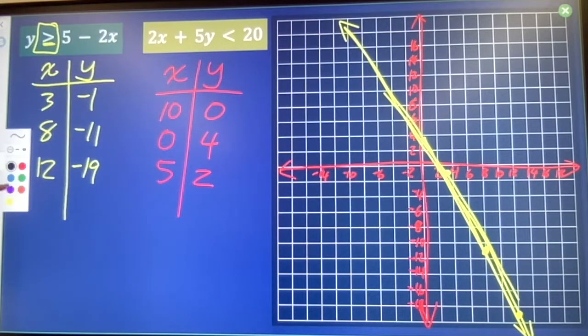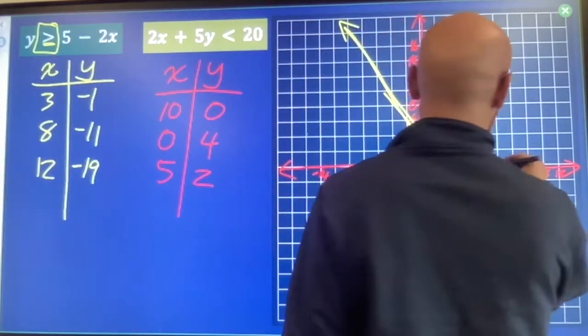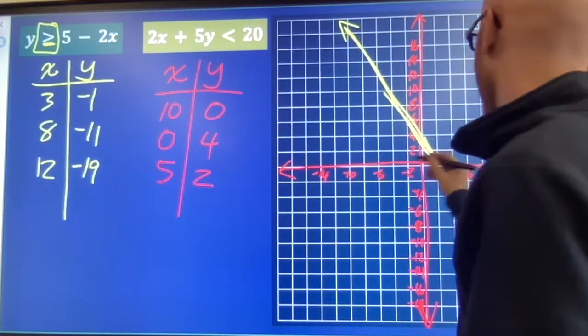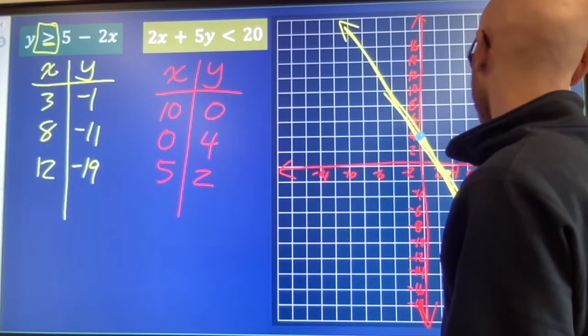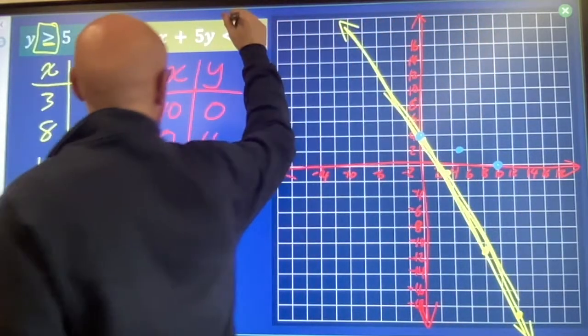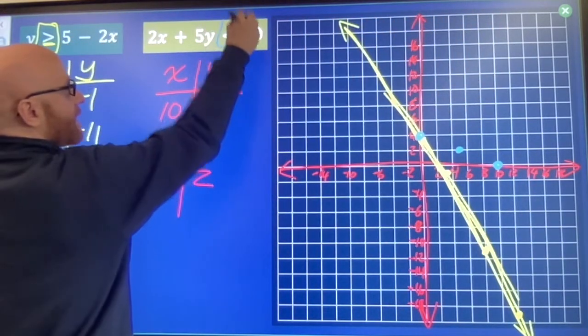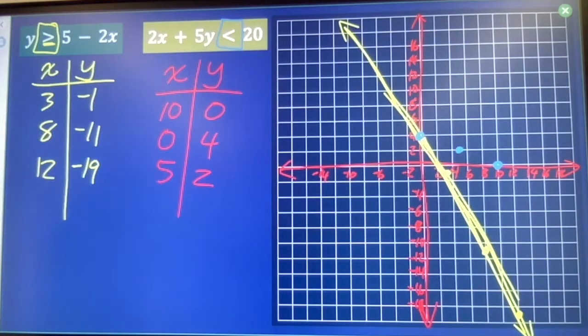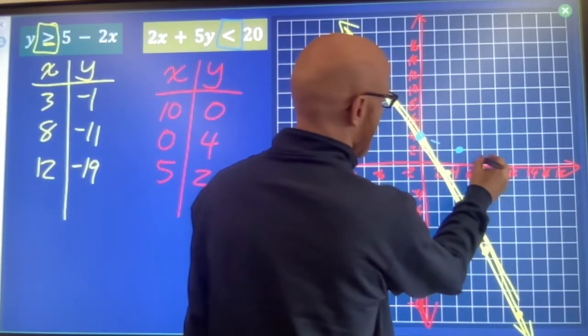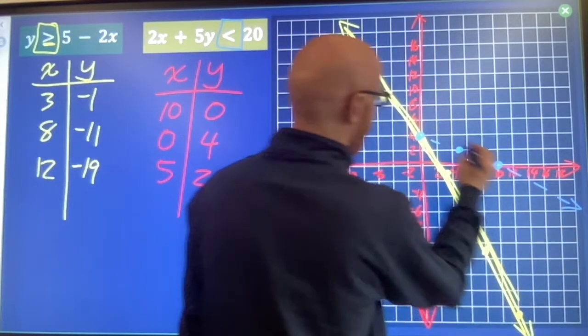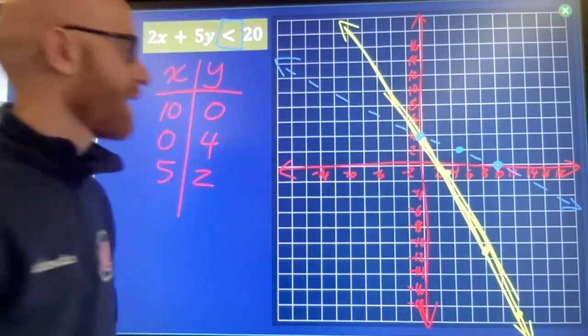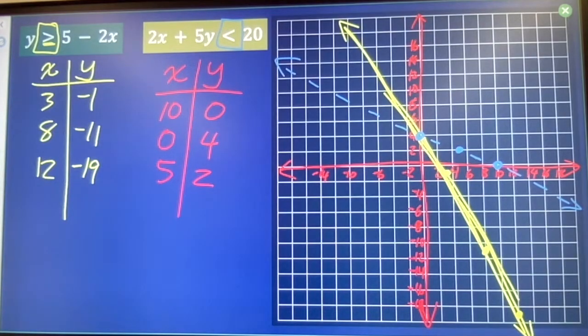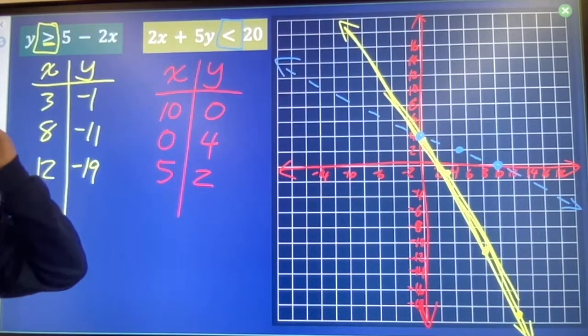This other guy, red, 10, 0, 0, 4, 5, 2, line up in a straight line. If I do not include an equals component, then I'm going to use dashed lines instead of solid lines. This lets the viewer know that we're not allowed to equal that line. We're allowed to get close to it, but we're not allowed to equal it.